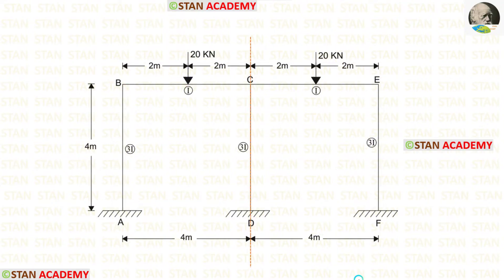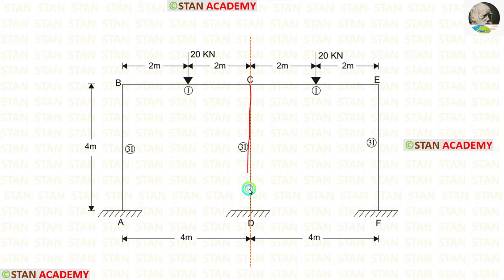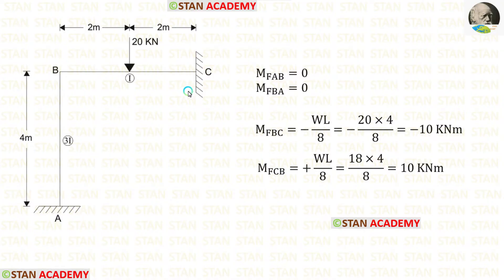This is a symmetrical frame. The line of symmetry passes through the middle column. From the line of symmetry, we can separate this frame into two parts and take the left side for analysis. In the column CD, there will be no rotation, so we can assume that point C is fixed.